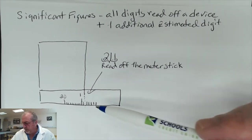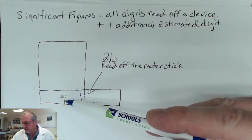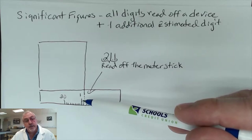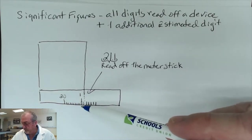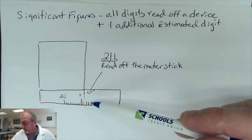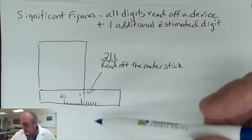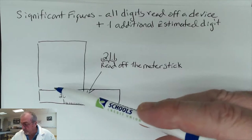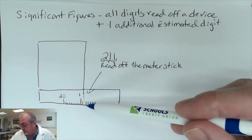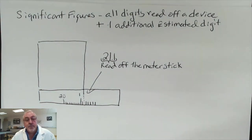For example, I've drawn a portion of a meter stick where this is 20 centimeters and this is 21 centimeters, with 10 division markers between them, so each division marker is worth 0.1. The edge of a piece of paper is falling between the first and second division markers, so now I have to estimate that last digit.